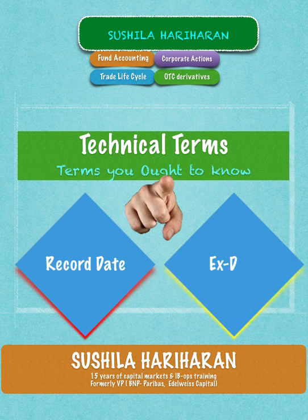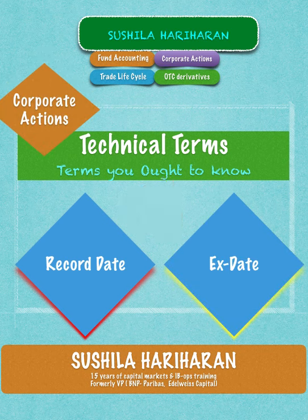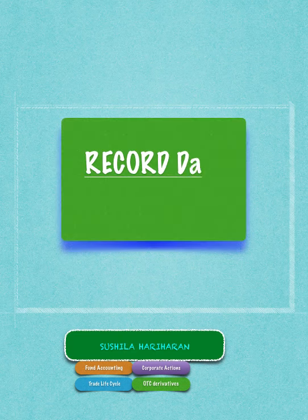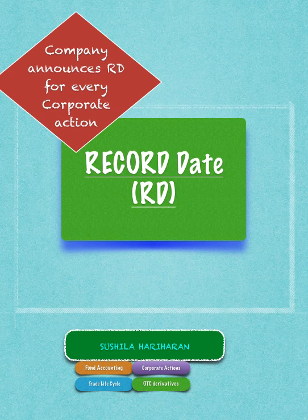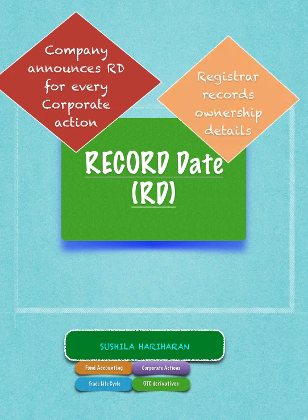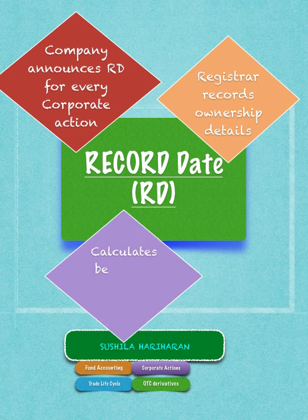This is very important to know. The record date is the date on which the company announces the record date for every corporate action. The registrar and transfer agent then swings into action to record all the ownership details and calculate the benefits or entitlements per owner. This is denoted by the term Rd.